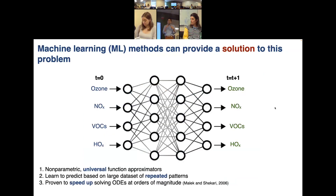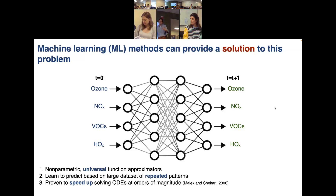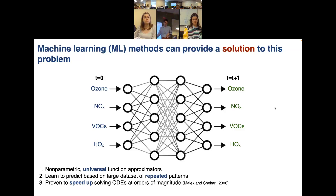Early in my PhD, we thought neural networks might be a solution for three main reasons. One: they're non-parametric universal function approximators — they can map any input to any output regardless of complexity or non-linearities. Two: they learn from large repeated patterns in big datasets, which we can easily generate. Three, and most importantly: they've proven to speed up solving differential equations at orders-of-magnitude gain, essentially replacing that expensive ODE solver with a series of learned matrix representations mapping input to output of chemical species.